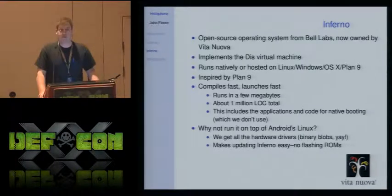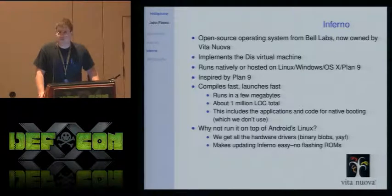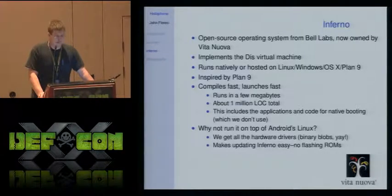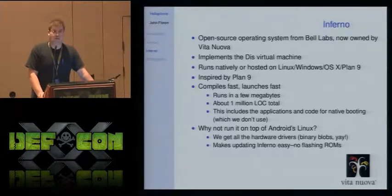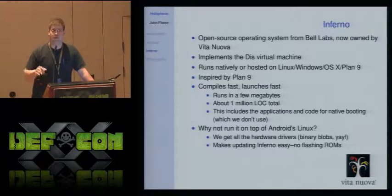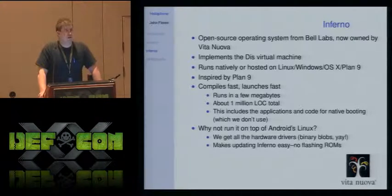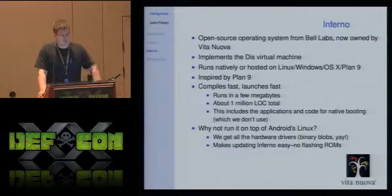So what can we do with this Linux platform? Some of us at work are fans of Bell Labs work like Plan 9 and Inferno, and we said Inferno might be a really good fit. Inferno is an open source operating system written at Bell Labs back in the 90s, maintained since then, currently owned by Vita Nuova, a British company. It implements a virtual machine called DIS, compiled and interpreted. Inferno can run natively or hosted on top of Linux, Windows, or Mac OS. It's inspired by Plan 9 — an evolution of its concepts — intended for use in set-top boxes and embedded devices back in the mid-90s. It was sort of ahead of its time, pushed as a competitor to Java because it's a virtual machine.